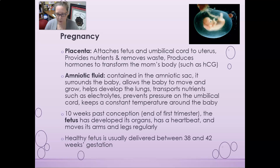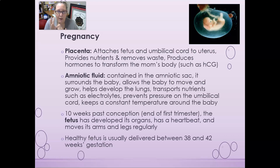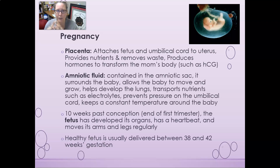By 10 weeks past conception — towards the end of the first trimester — the fetus has developed all of its organs. It has a heart, a brain, a heartbeat, and can move its arms and legs regularly, so it's essentially fully formed. A healthy fetus is usually delivered between weeks 38 and 42 of gestation. After the first trimester, it mostly just grows and refines different features.